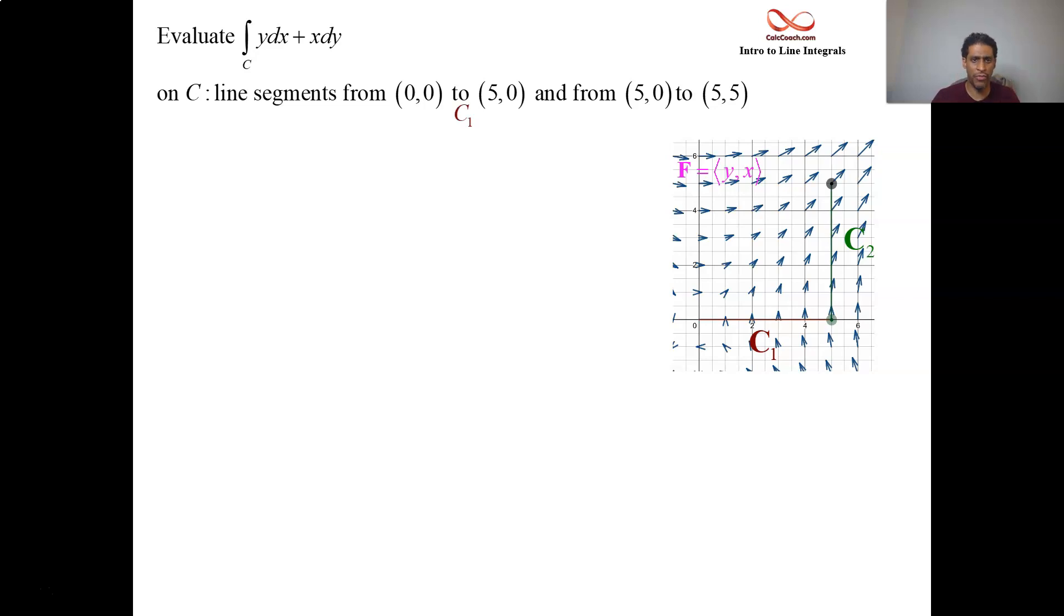So c1 is the path from 0,0 to 5,0. And then c2 is the path from 5,0 to 5,5. We'll have them color coded, one slide for each. The actual full curve is the union of those two curves. Let's calculate the integral over c1. Visually, it looks like it's going to be 0. The dot product between f and dr is going to be 0 because those vectors are orthogonal to each other.